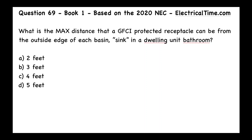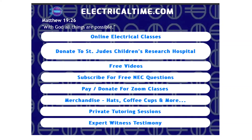This is question number 69 from book number one, based on the 2020 NEC from electricaltime.com. What is the max distance that a GFCI protected receptacle can be from the outside edge of each basin — which we call a sink — in a dwelling unit bathroom? Answer choices: A) two feet, B) three feet, C) four feet, D) five feet.